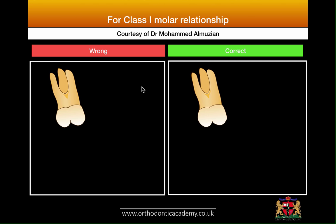Many people ask me about my bracket positioning, especially positioning the tube on the sixes when we have a Class 1 molar relationship, or when we are going to end in a therapeutic Class 2 or therapeutic Class 3. As we know, according to Andrews, Class 1 molar occlusion is defined as a situation when the mesiobuccal cusp of upper six occludes with the mesiobuccal groove of lower six, as well as having the distobuccal cusp of upper six occluding in the embrasure between the lower six and lower seven.